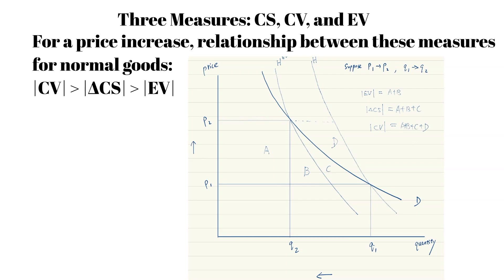The uncompensated demand curve is related to the consumer surplus change, while the compensated demand curves are related to the compensating variation and equivalent variation. The compensated demand curve going through the original equilibrium is associated with the compensating variation, while the one going through the new equilibrium is associated with the equivalent variation. For a price increase of a normal good, the compensating variation is larger than the consumer surplus change, which is larger than the equivalent variation in absolute values.